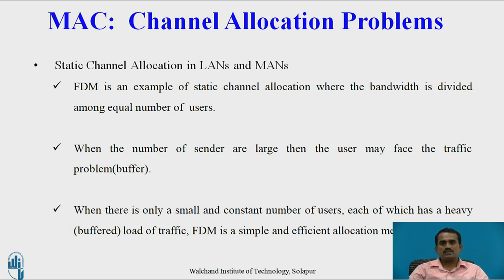When the number of senders is large, the user may face a traffic problem. For example, if only 10 users are allocated but 20 users want to transmit, the user will face a traffic problem. In that case, the user must store data in a buffer, which is used for temporary storage. When there is only a small and constant number of users each with a heavy traffic load, FDM is a simple and efficient allocation mechanism for transmitting data.